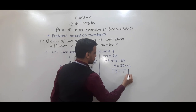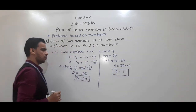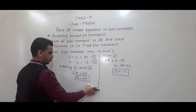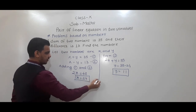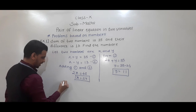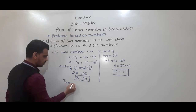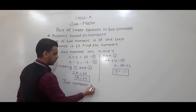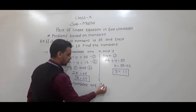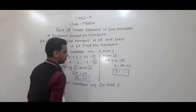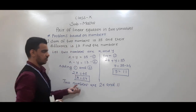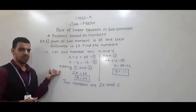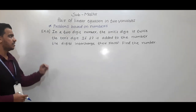So y is equal to 11. Therefore the two numbers are 24 and 11. One important thing: when we have a problem, write the final answer clearly. Write: the two numbers are 24 and 11. Now we will take the second example.